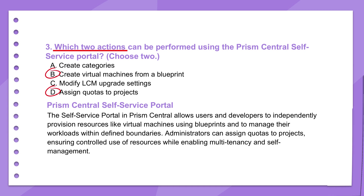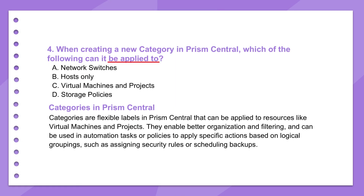Another question in Prism Central brings up categories. You can apply a new category to VMs and projects — they're logical tags. You could tag VMs by function, like 'database' or 'web,' or by environment, like 'prod' or 'dev.' The real power is that you can use categories to automatically apply policies: backup schedules, security rules via Flow, and performance settings, just by tagging the resource. You manage based on the tag rather than hunting down individual VMs — a policy-driven, scalable approach.